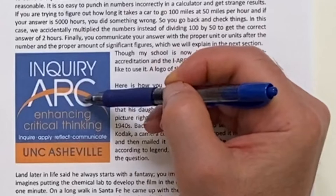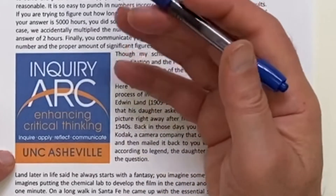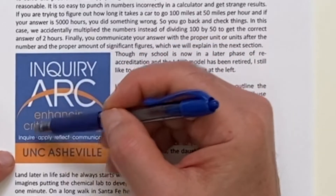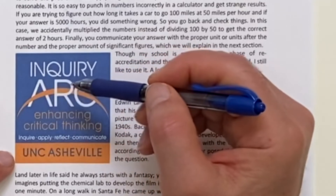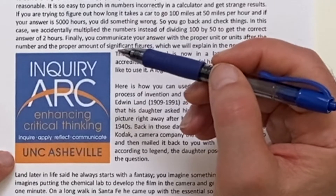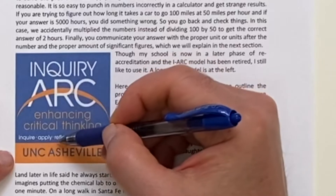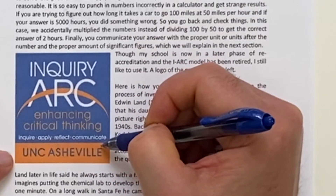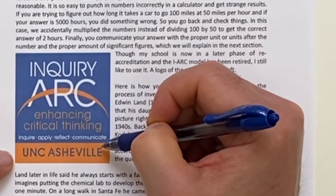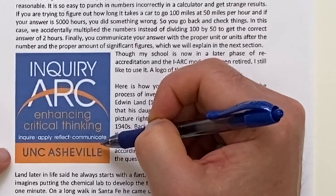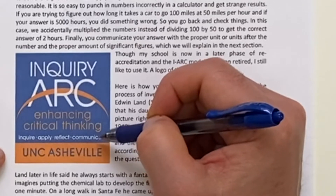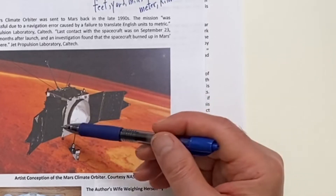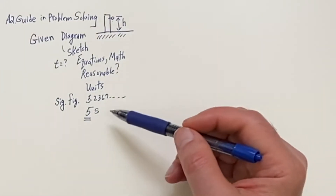They called it the Inquiry Arc. The inquiry is the question — in a word problem you're trying to figure something out. Then you have the apply stage, where you use equations and do math. Then you reflect on whether the answer is reasonable. Finally, you communicate, making sure significant figures are correct and units are included — to avoid miscommunication like the Mars Climate Orbiter, which was lost because units were not included.